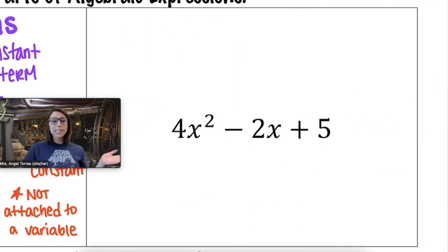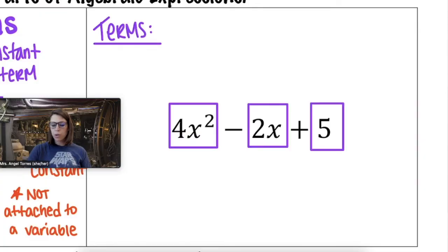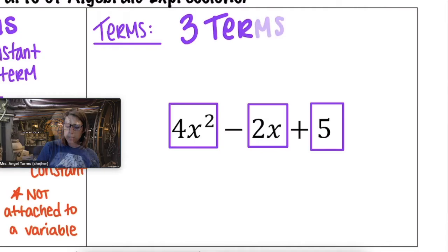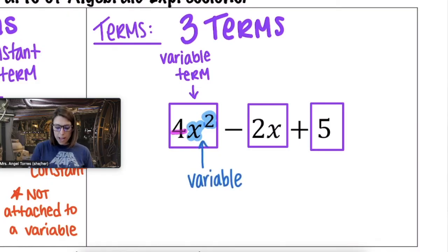We're going to start this second example the same way. How many terms are in this expression? I count one, two, three. This expression has three terms and we're going to go in and look at each term from left to right starting with 4x squared. Since this term has a variable in it, we would call this a variable term. What's the variable? x squared. What else is part of that first term? That's right, the 4. And the 4 is called the coefficient.